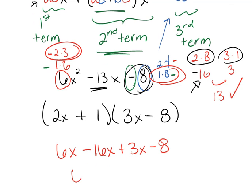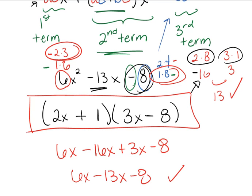Our middle terms combine to give us 6x minus 13x minus 8, which is correct. So, here is the factored form of that trinomial.